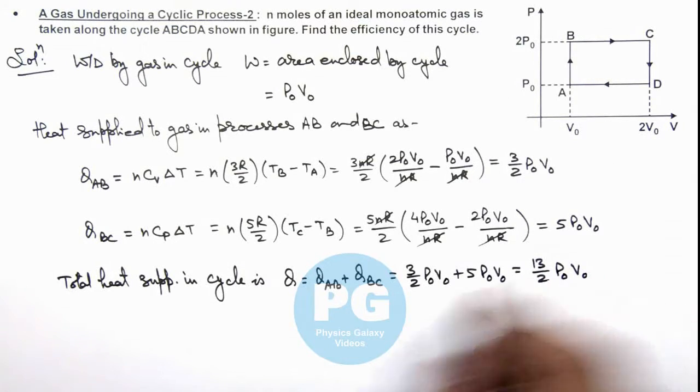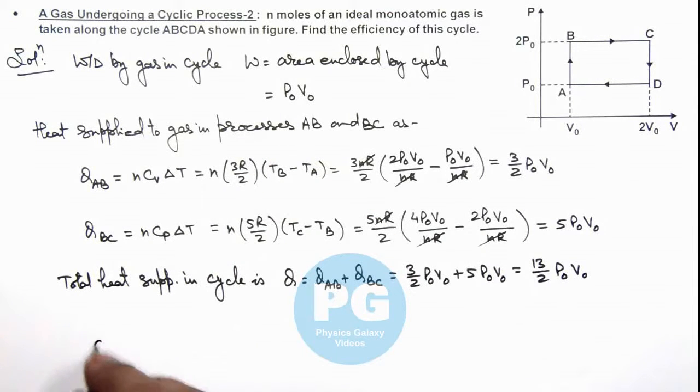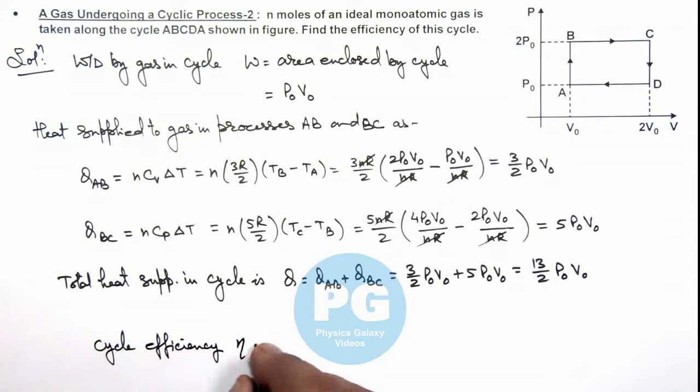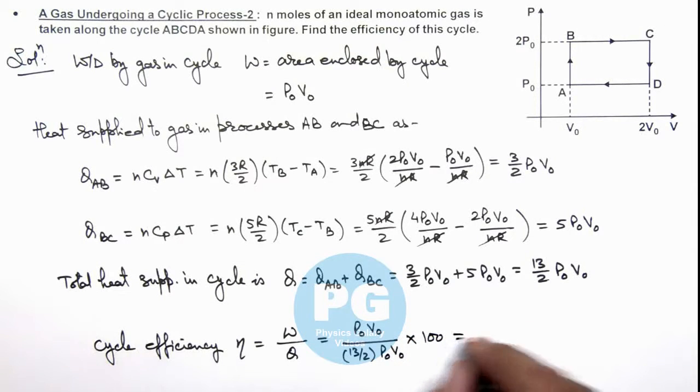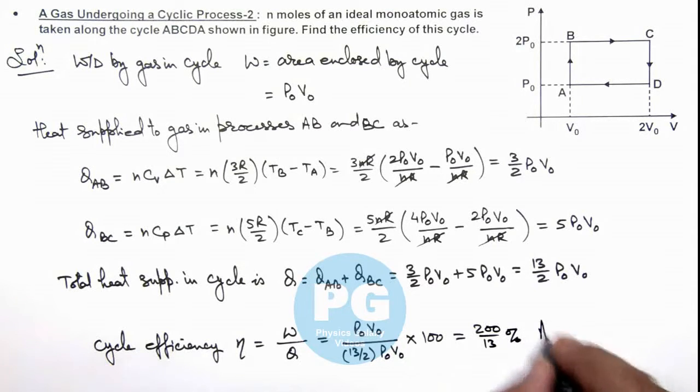As we are having the heat supplied and work done, we can directly calculate the cycle efficiency η, which is given as work done by the gas divided by the total heat supplied. So this can be written as P₀V₀ divided by 13/2 P₀V₀ multiplied by hundred in percent. So the numerical value will be 200/13 percent, that is the result of this problem.